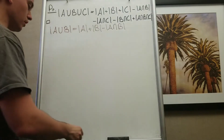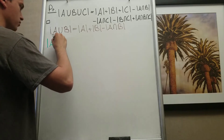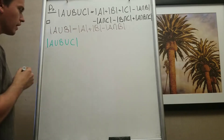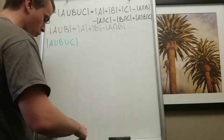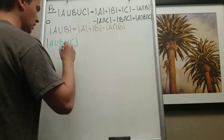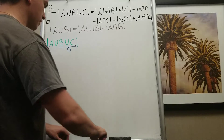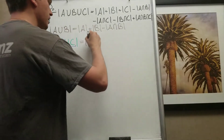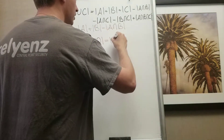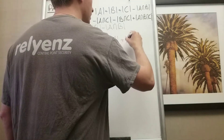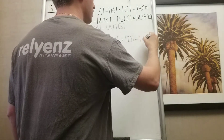What I'm going to do is write |A ∪ B ∪ C|. We have three elements, but we can apply the two-set formula using a substitution trick. Let's name D = B ∪ C as another set. Then A ∪ B ∪ C equals A ∪ D, and applying the formula gives us |A| + |D| − |A ∩ D|.